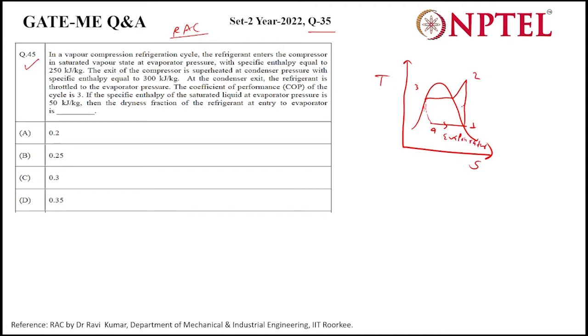This is the compressor, condenser, and expansion valve. So this is the VCR cycle. In the expansion valve, throttling happens, so h3 will be equal to h4. Now in the cycle it is being asked: